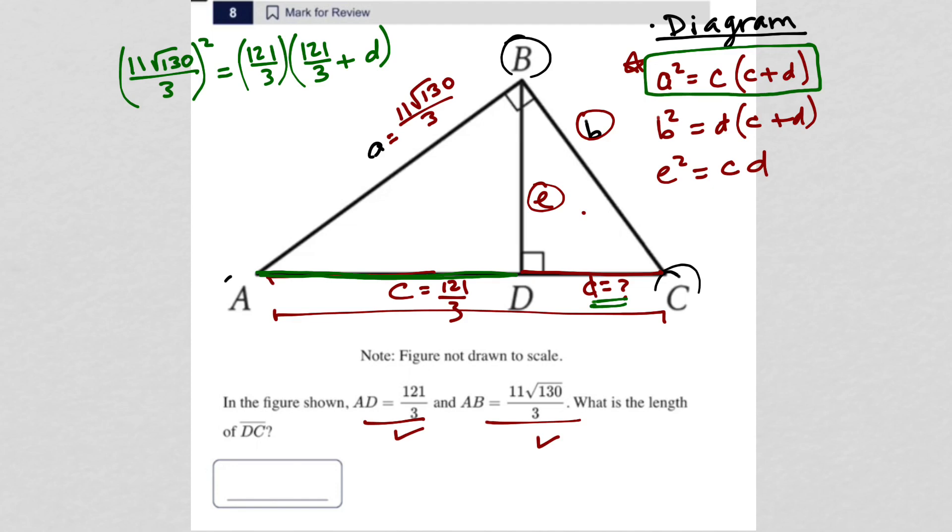Now there's just a lot of math to do. So 11 square root 130 squared over 3 squared. Let's just do that. I get 15,730 over 9 equals. Now I'm going to distribute this 121 over 3 across.